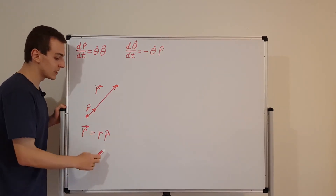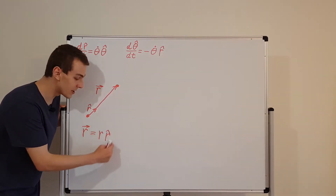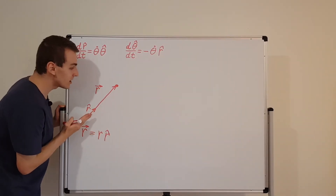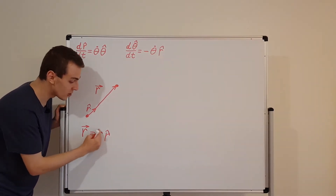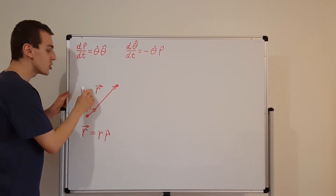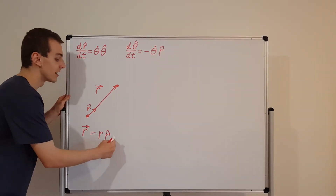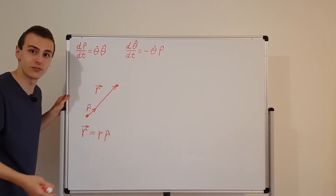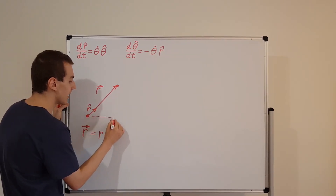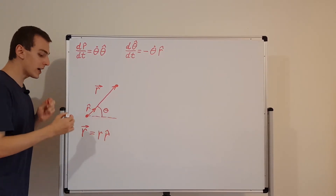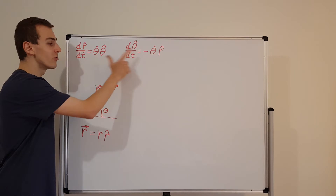We don't need to explicitly state the angle because r̂ already depends on theta — it depends on the cosine and sine of theta. So indirectly, the position vector depends on the angle. The angle theta is measured from the reference direction, but we don't write it explicitly because we're choosing a coordinate system that moves with the particle.